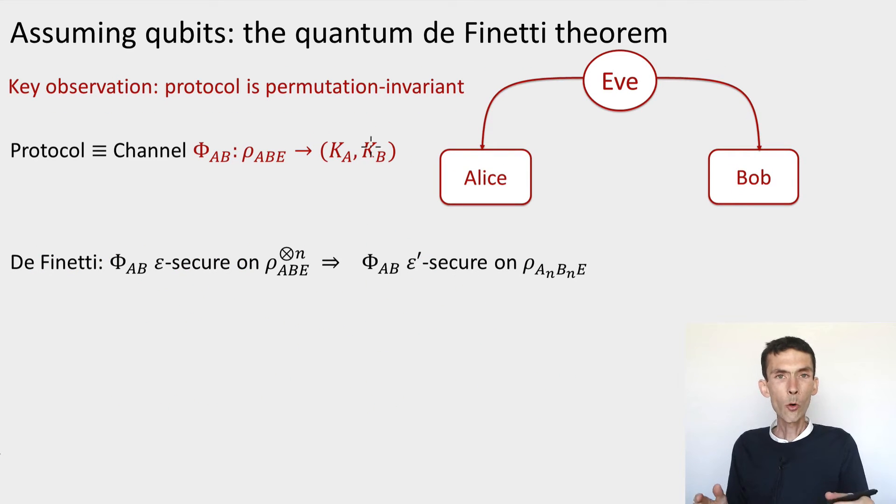So let me tell you about these two tools. The first tool is a very important general tool that's useful across quantum information theory that's called the quantum de Finetti theorem. And this theorem will not let us conclude a proof of security in the fully device independent setting because it requires assuming that the quantum states that are within Alice and Bob's device have a limited dimension.